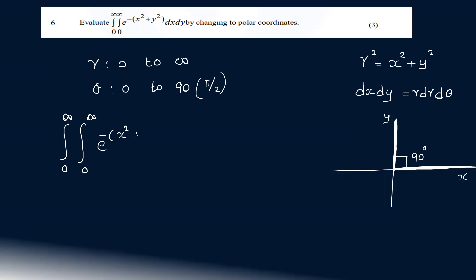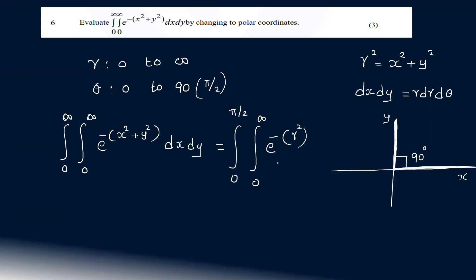So the integral from 0 to infinity, 0 to infinity, e raised to minus of x square plus y square dx dy becomes: integral 0 to pi by 2, integral 0 to infinity, e raised to minus r square, r dr dθ.